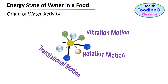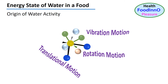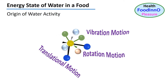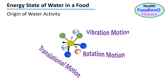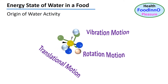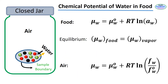First, we can start with the energy state of water. We can visualize the energy state from the vibrational, rotational and translational motions of a water molecule. Therefore, a higher energy state indicates a high level of molecular motion or mobility — that is, more reactivity and availability for microbes. We can see water inside the sample boundary at different energy states, marked black, green and red.